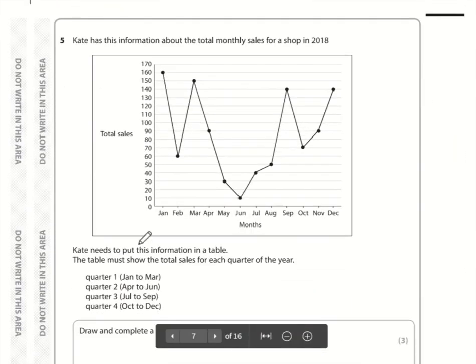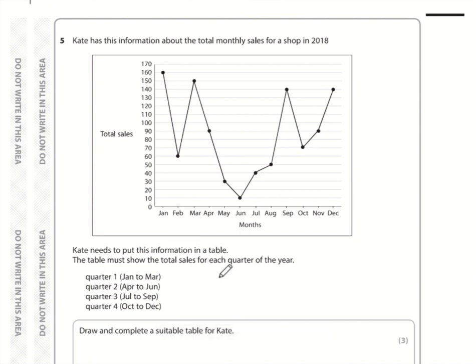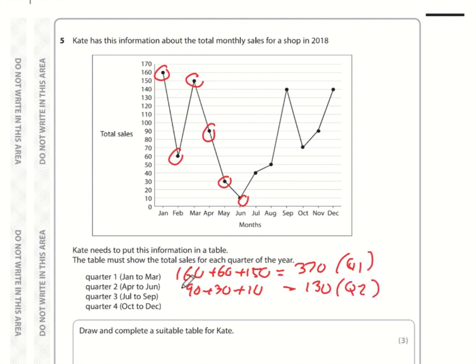Question number 5. First, I'm going to work out the total sales for quarter one. We've got 160, 60, 150. That is 160 plus 60 plus 150, which is 370. Quarter 2: 90, 30, 10. 90 plus 30 plus 10, which is 130. Quarter 3 is 40, 50, 140. 40 plus 50 plus 140, which comes to 230.